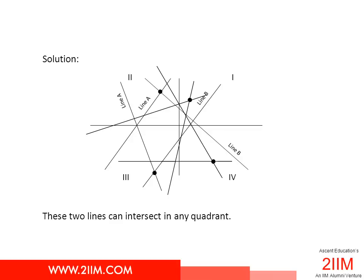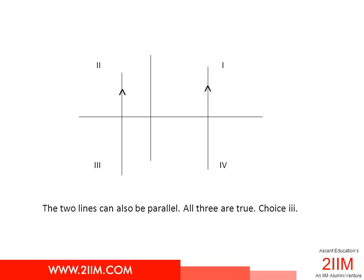These two lines, given no other constraints, can intersect in any of the four quadrants. Unless we are told that one of the lines passes through the origin or is parallel to the x-axis or y-axis, the lines specified in the question can take a variety of slopes and they can intersect in any of the four quadrants.